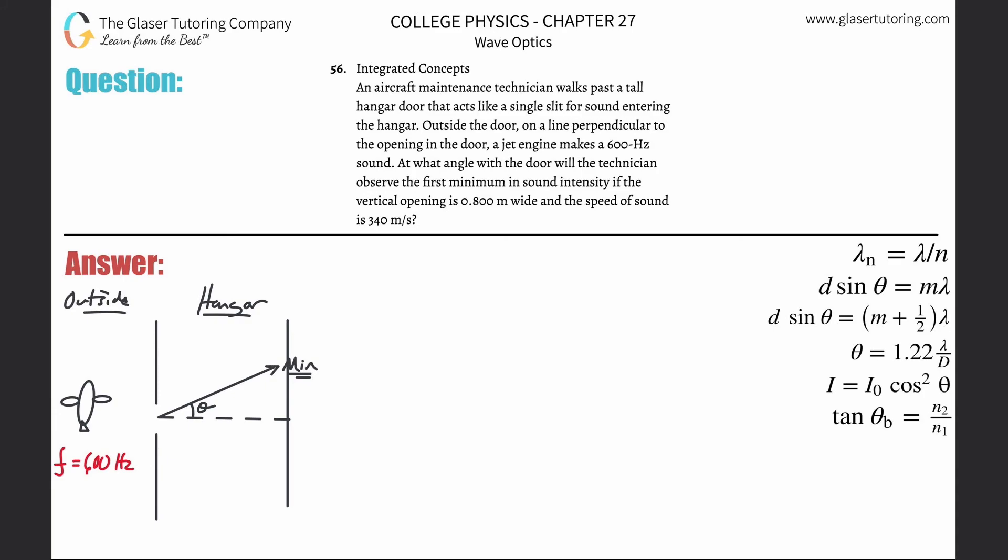Number 56, integrated concepts. An aircraft maintenance technician walks past a tall hangar door that acts like a single slit for sound entering the hangar. Outside the door, a line perpendicular to the opening in the door, a jet engine makes a 600 hertz sound. At what angle with the door will the technician observe the first minimum in sound intensity if the vertical opening is 0.8 meters wide and the speed of sound is 340 meters per second?